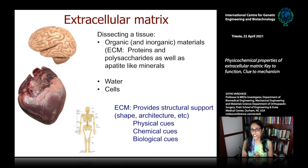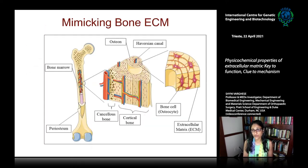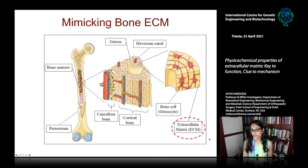Initially, we thought the job of ECM was to provide structural support — shape, architecture, etc. Now in recent emerging studies, we know that ECM also provides physical, chemical, and biological cues. One of our interests is mimicking bone ECM, and in this case we are going to focus on the calcium phosphate mineral environment. Bone is a dynamic tissue — it is highly remodeled — and two cell populations contribute to this process: osteoblasts that contribute to tissue formation, and osteoclasts that contribute to ECM degradation.